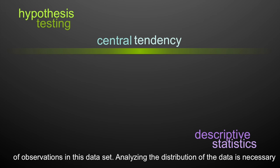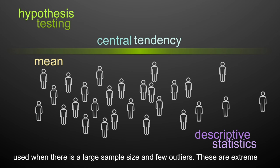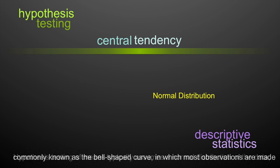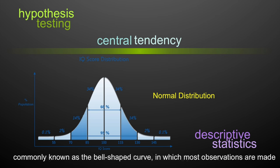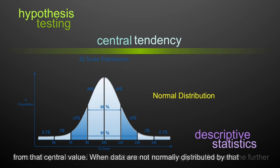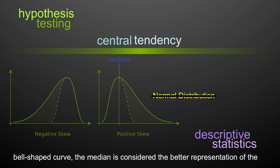Analyzing the distribution of the data is necessary to determine the appropriate measure of central tendency. A mean is typically used when there's a large sample size and few outliers — extreme observations that might have some direct influence on the mean. Hypothesis testing of means typically assumes a normal distribution of data, commonly known as the bell-shaped curve, in which most observations surround the central value and become increasingly less frequent the further from that central value. When data are not normally distributed, the median is considered the better representation of a typical value.